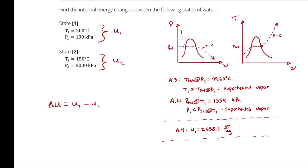Let's start by looking up the saturation temperature corresponding to our pressure of 5,000 kilopascals. Converting: 5,000 kilopascals equals 50 bar, because 100 kilopascals equals 1 bar.